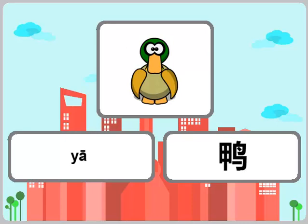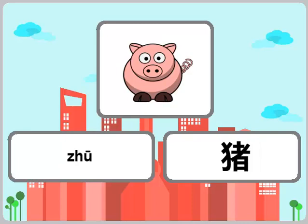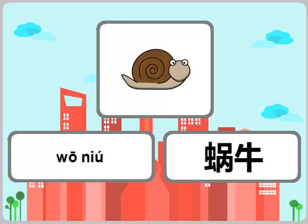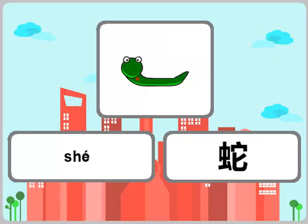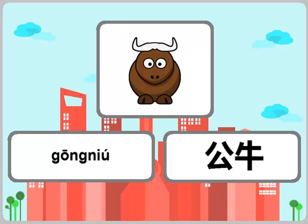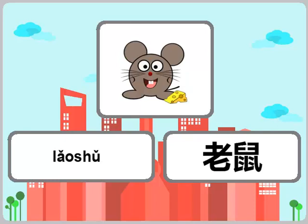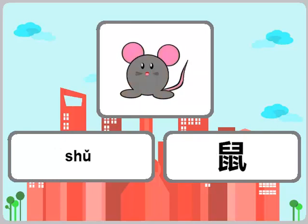Duck 鸭, Cock 公鸡, Pig 猪, Snail 蜗牛, Snake 蛇, Fish 鱼, Bull 公牛, Worm 虫, Mouse 老鼠, Rat 鼠.